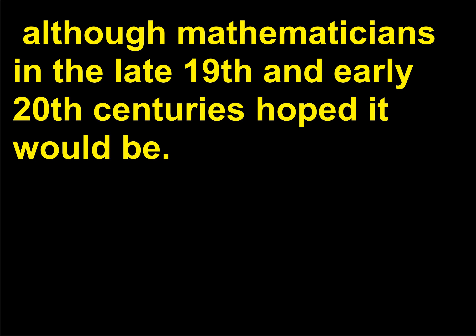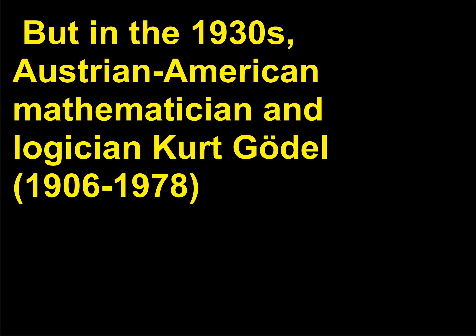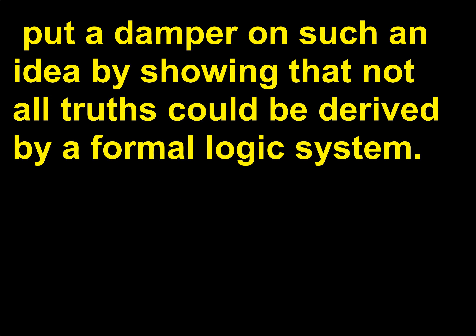Thus, mathematics began to encompass symbolic logic with precise rules to manipulate those symbols. Of course, nothing is perfect. Although mathematicians in the late 19th and early 20th centuries hoped it would be, they believed that all of mathematics could be described using symbolic logic and made purely formal. But in the 1930s, Austrian-American mathematician and logician Kurt Gödel (1906–1978) showed that not all truths could be derived by a formal logic system.